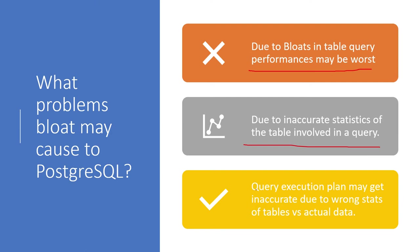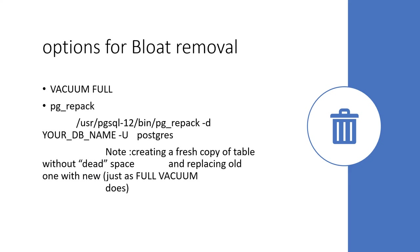When a query executes, it generates an execution plan. If the table statistics are not correct, the execution plan will also not be optimum. Instead of giving the best results in the best time, it will give you results in an inappropriate time. If the execution time should be ten seconds, due to bloating it may be more than that. This causes performance degradation of the overall database where bloating has happened in those tables.